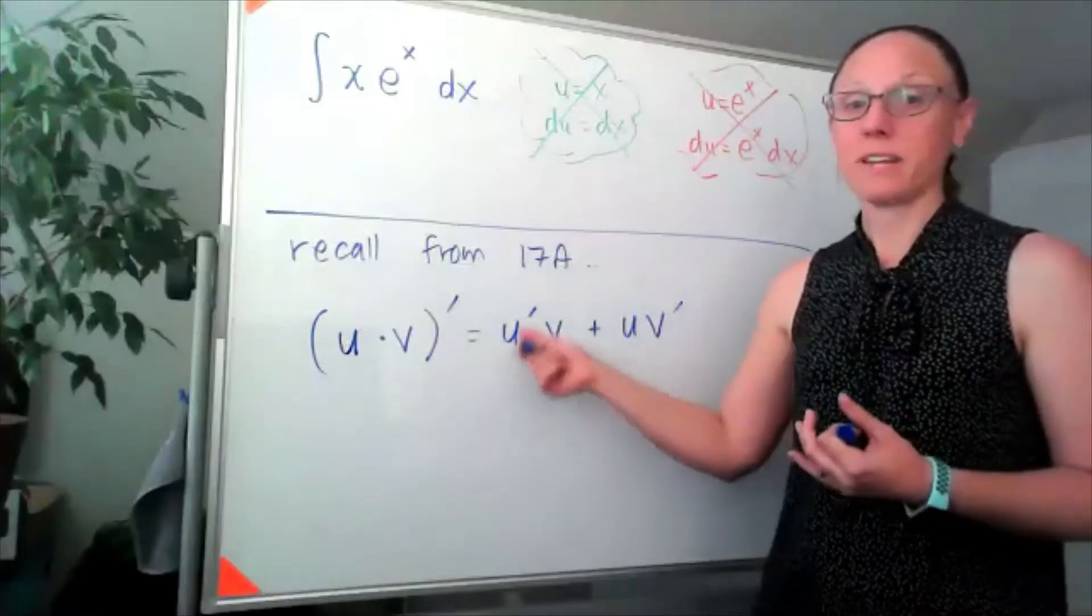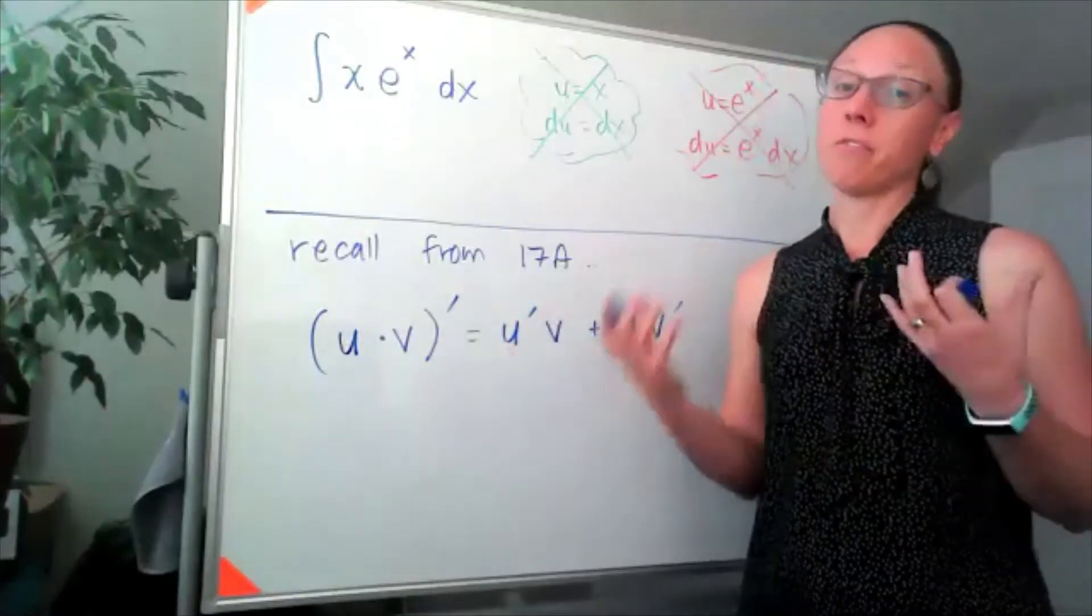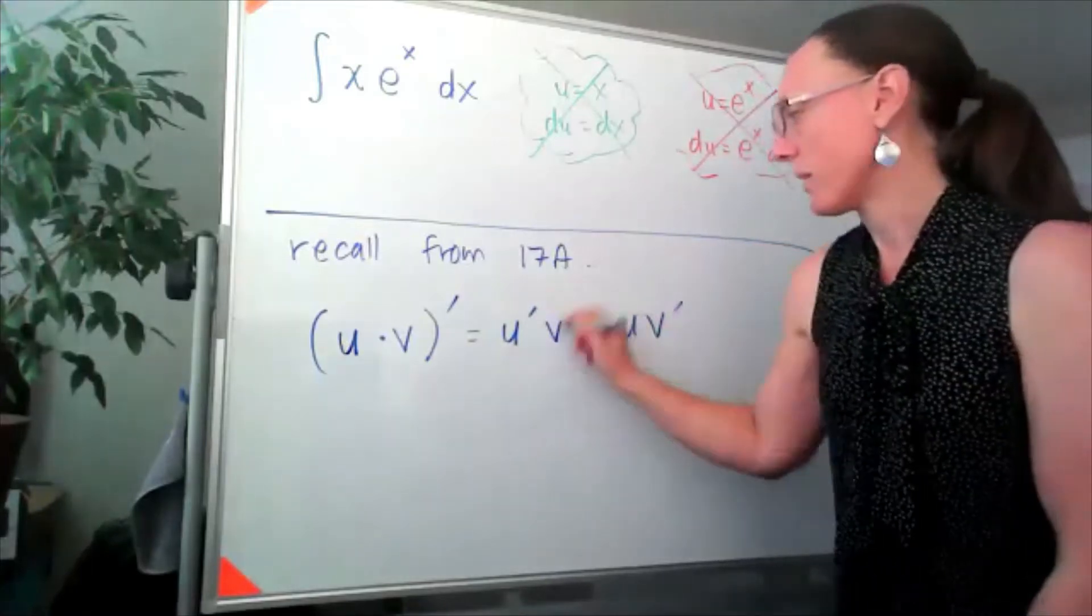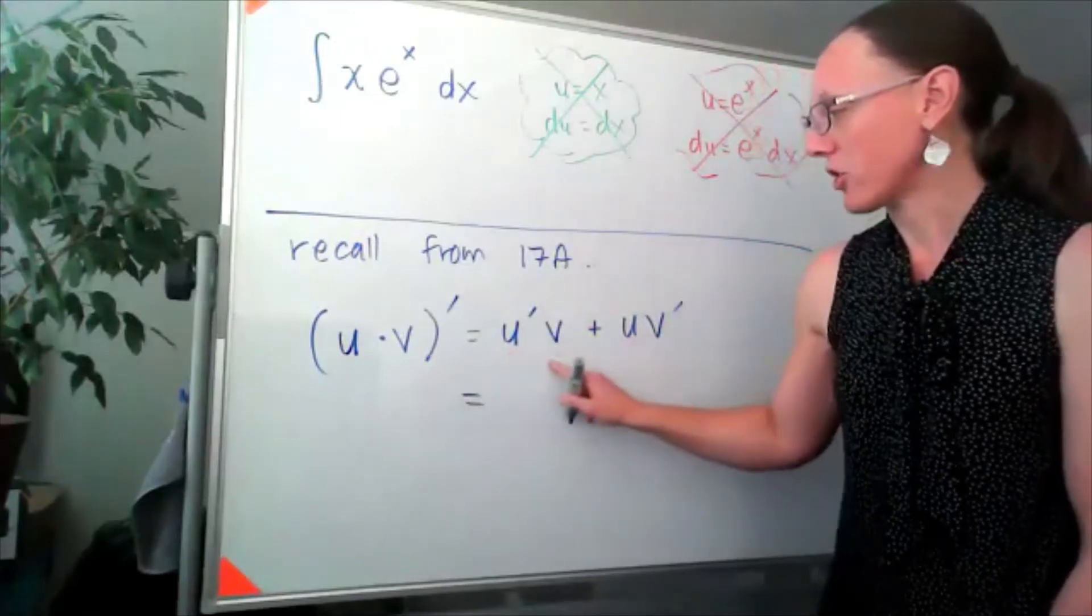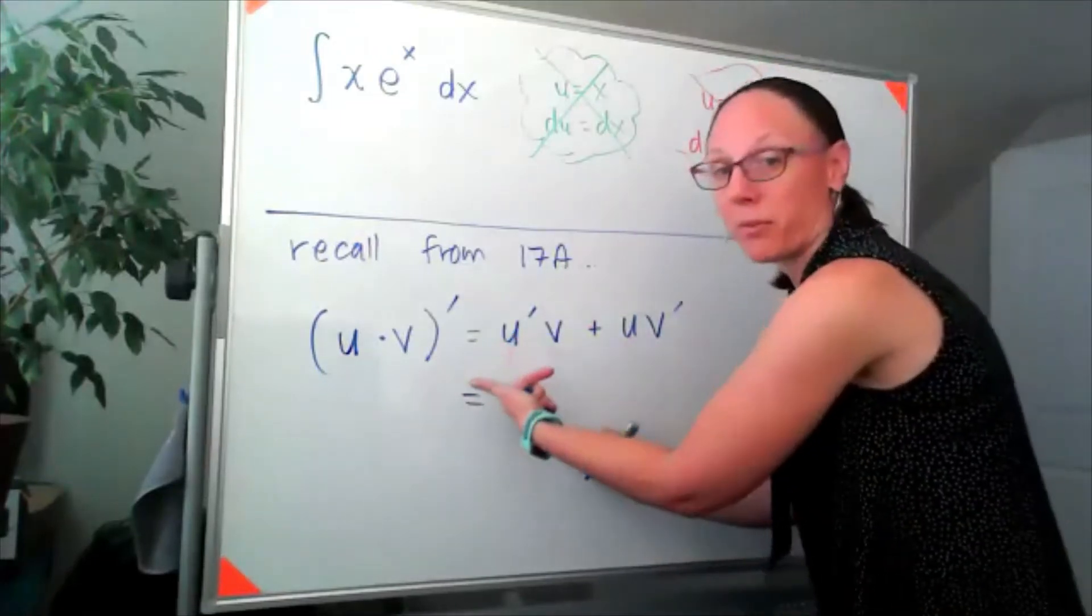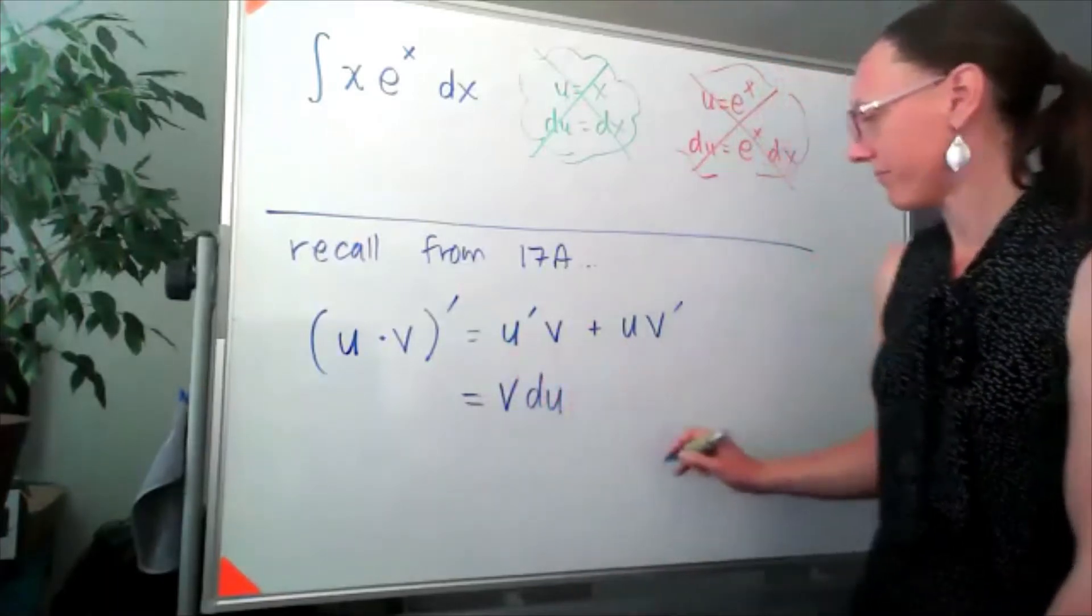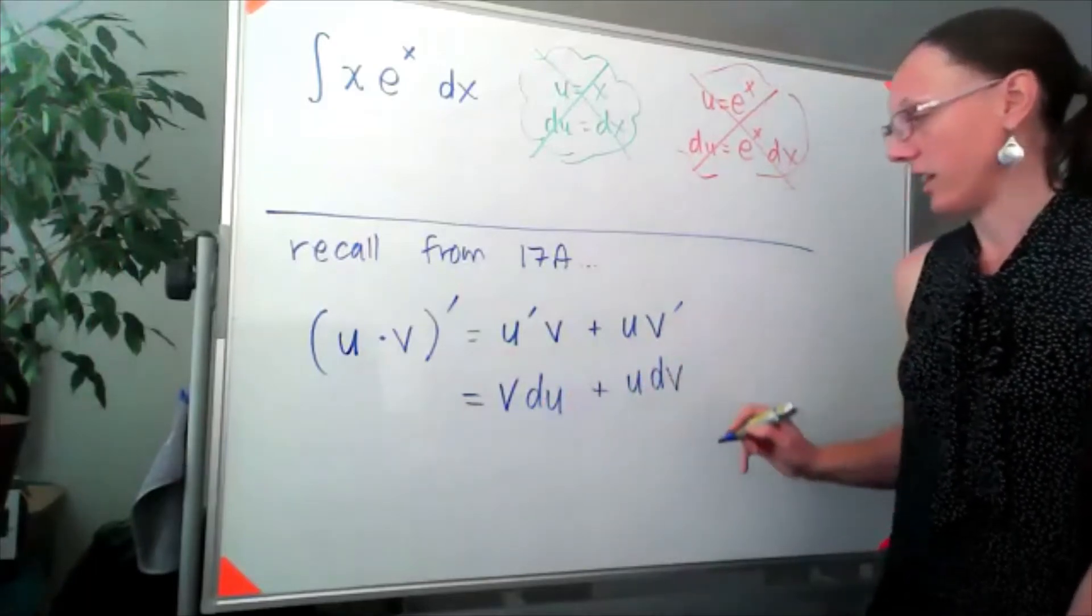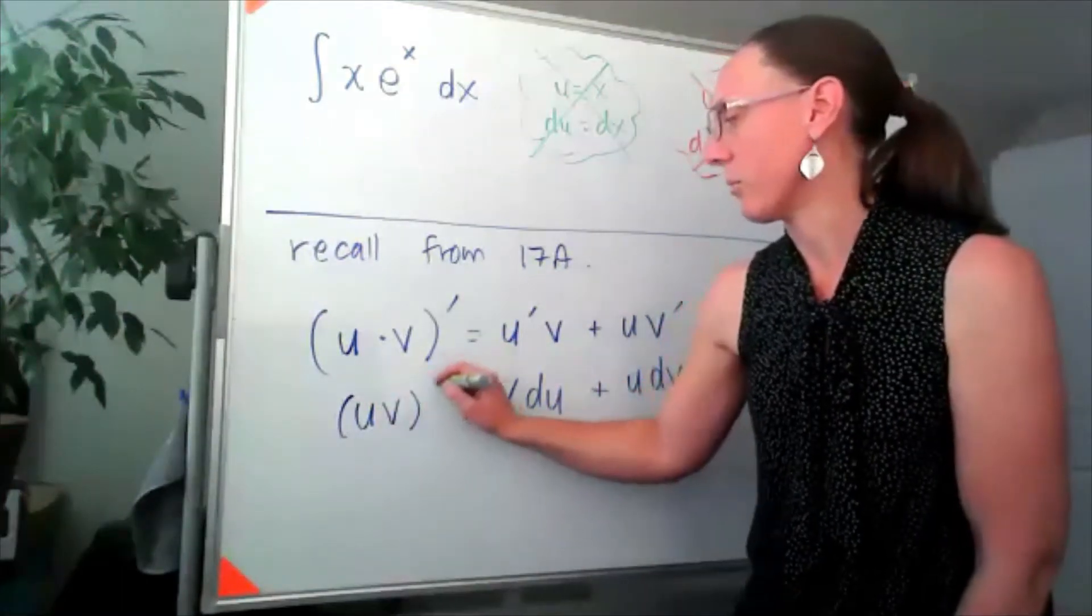And the other way to write that u' part that we use when we're talking about integrals is as a differential. So I'm going to swap out that u'v and actually swap the order on that and call that v du. And over here, I'm going to leave that as u dv. And on that side, I have u times v'.